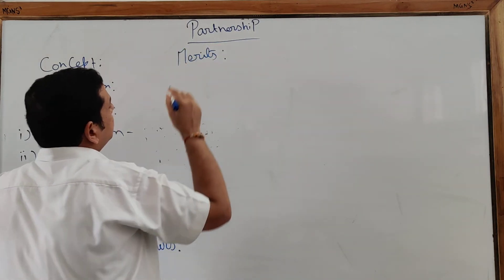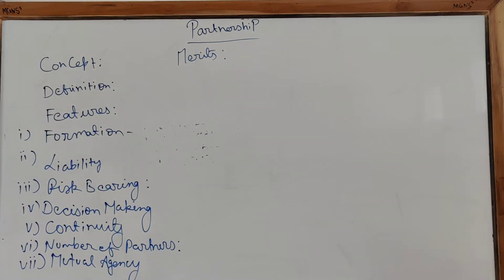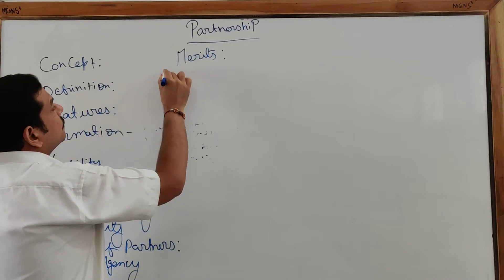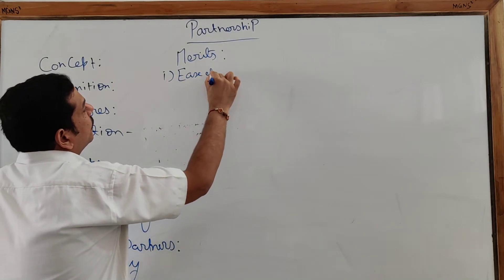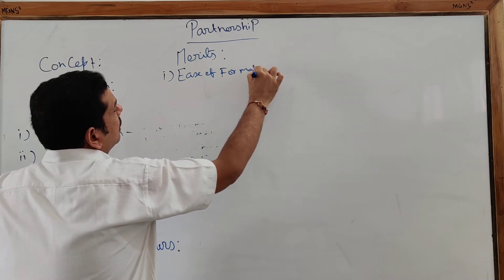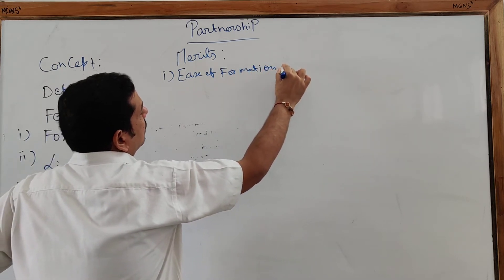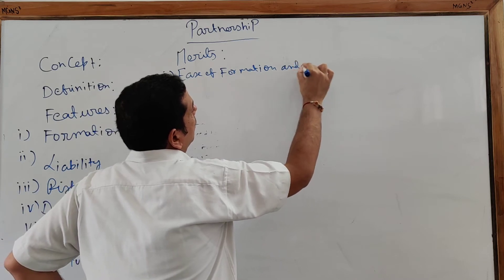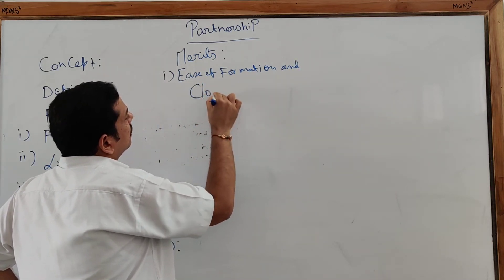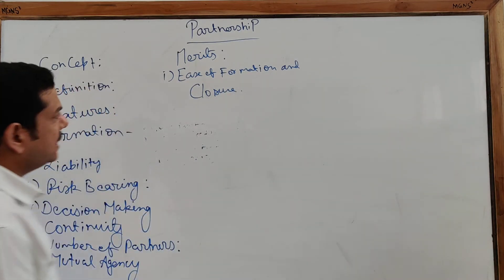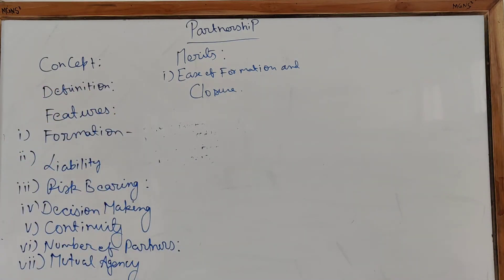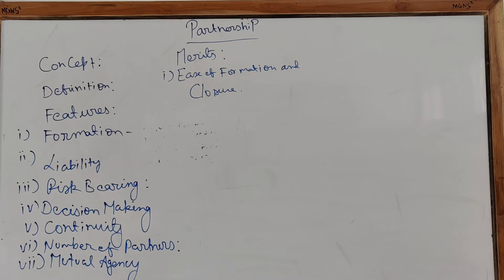Merit 1 — Ease of Formation and Closure: It is very easy to form a partnership. The agreement may be oral or written. A minimum of two members is required and there is no compulsion with respect to the registration of the firm. Closure of the firm is also a very easy task.